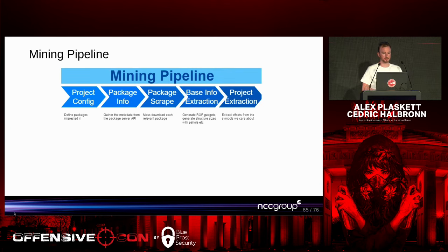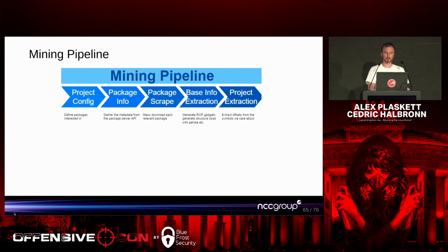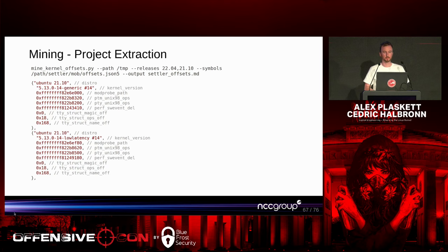The mining pipeline works like this: we define a project configuration with the packages we want in the environment, scrape package information from distribution APIs, then generate ROP gadgets, structure sizes, and so on for different kernel versions. For exploit-specific extraction, we write a JSON file defining the offsets we're interested in — symbol offsets and structure offsets — and generate all the offsets for different kernel releases that we integrate into our exploit.